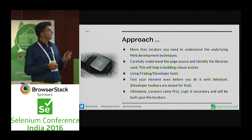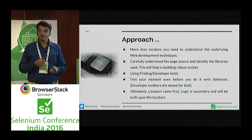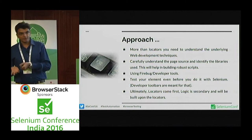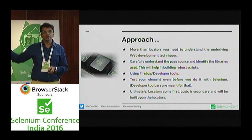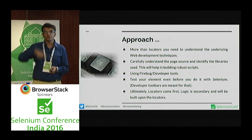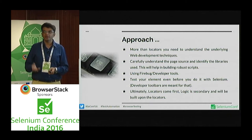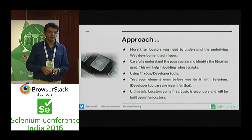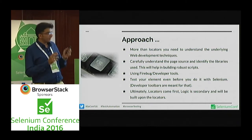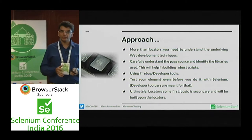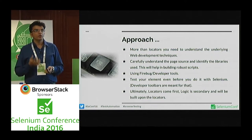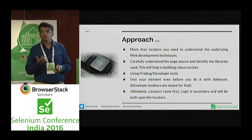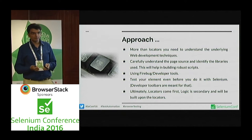If you don't understand what HTML technology the application is built on, you start writing selectors and use them — but going forward those selectors turn out to be fragile. You then go back and realize: 'Oh, this was an AJAX element, I didn't analyze it properly.' If you had analyzed your HTML application correctly — what technology is being used, what JS libraries — you'd be in a better position to identify your locators.